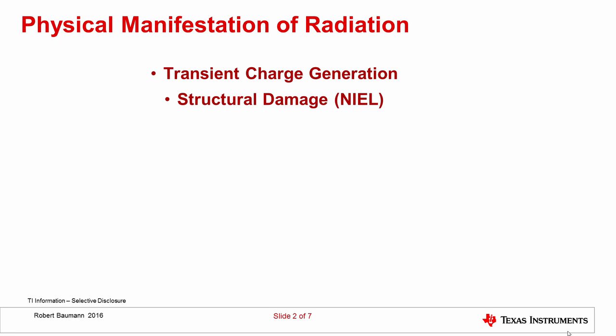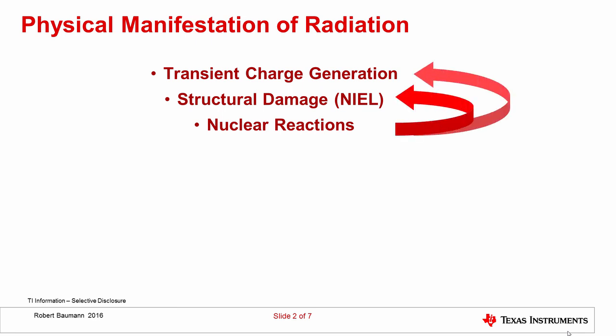Basically, we have transient charge generation and structural damage. There is also a third way in which radiation can lose energy in matter, and that is nuclear reactions. A nuclear particle like a proton or neutron incident on a silicon wafer may actually react with the silicon nuclei and form nuclear reactions. These are like small explosions of the nuclei, so you get secondary products — pieces of the nucleus — which are highly ionizing. These secondary products can generate additional transient charge generation as well as additional structural damage.